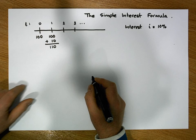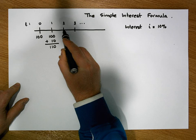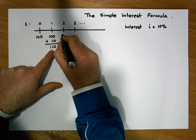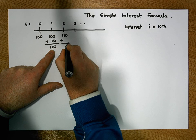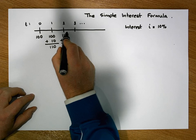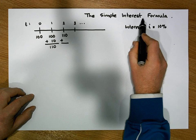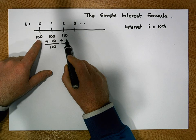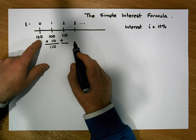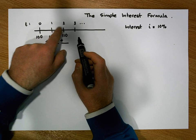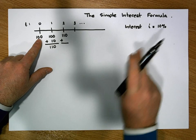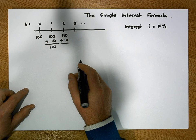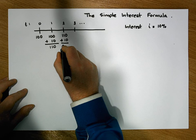Now let's assume two years have elapsed. We'd expect what we had in the previous year — €110 — plus a reward for leaving it for the extra year. The key thing about simple interest, and what differentiates it from compound interest, is that the reward is always based on the principal placed in the account at time zero. So the interest after two years is 10% of €100, which is €10, giving us €120.